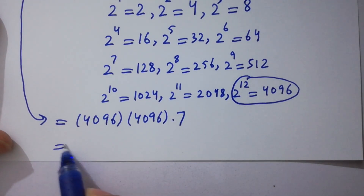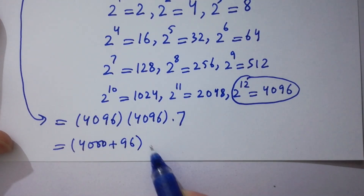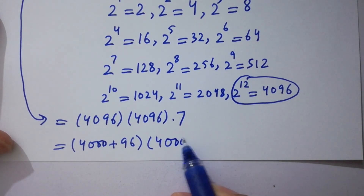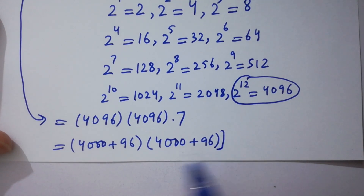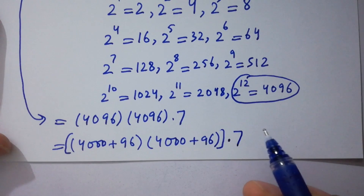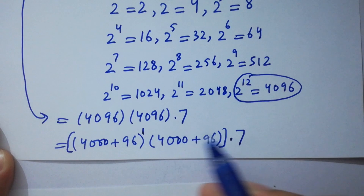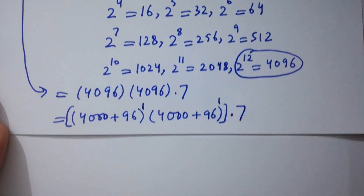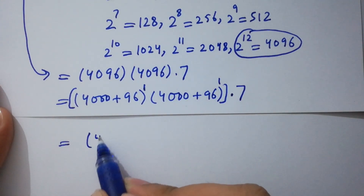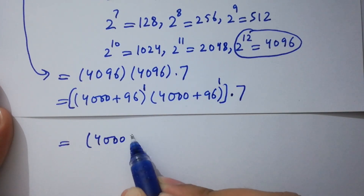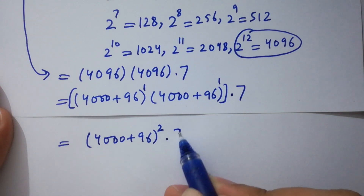This can be written as 4000 plus 96, and here 4000 plus 96 to the whole power 2 times 7. Both terms have power 1, same base, so powers add, giving 4000 plus 96 to the whole power 2, times 7.